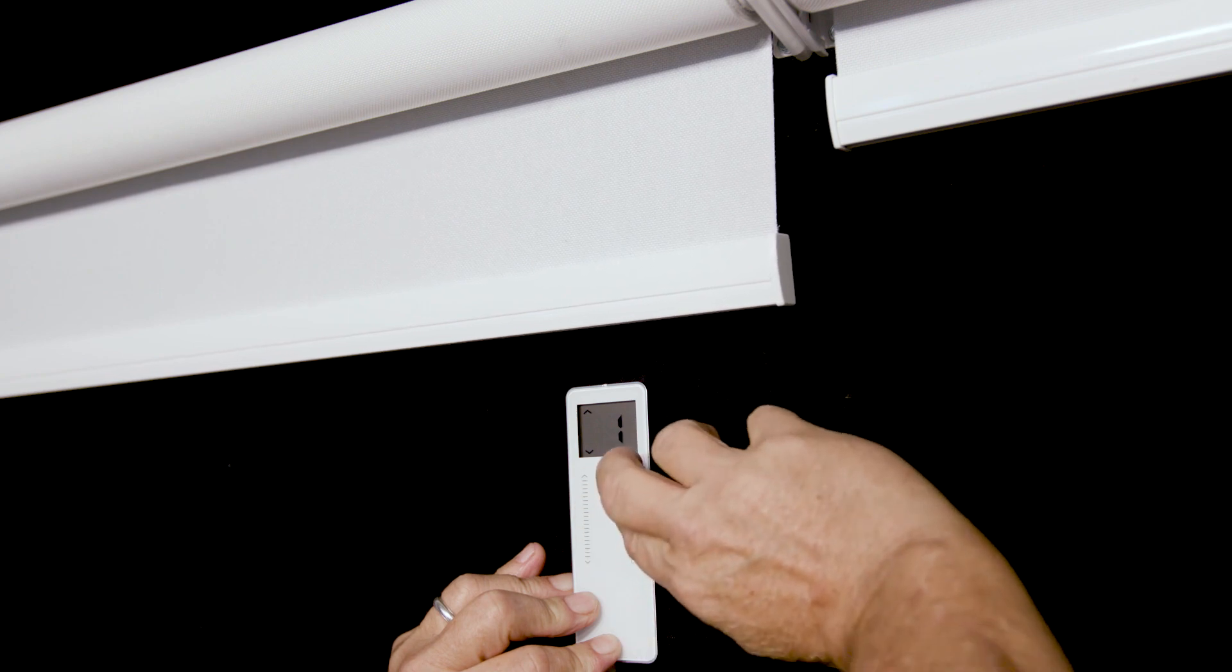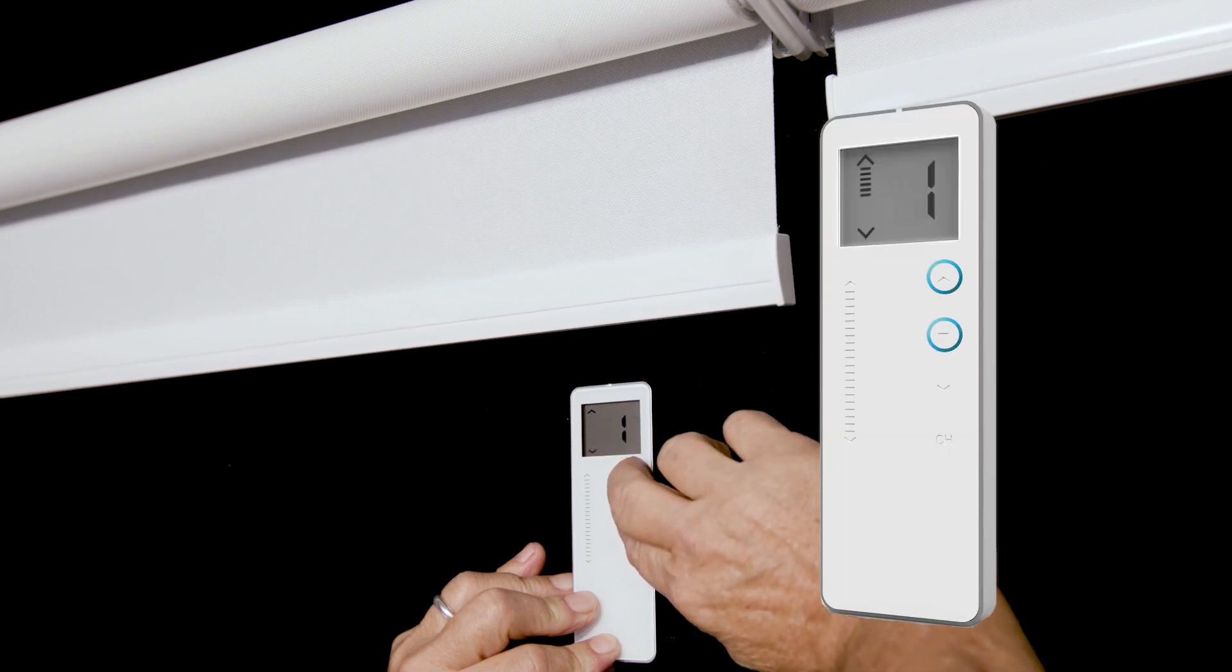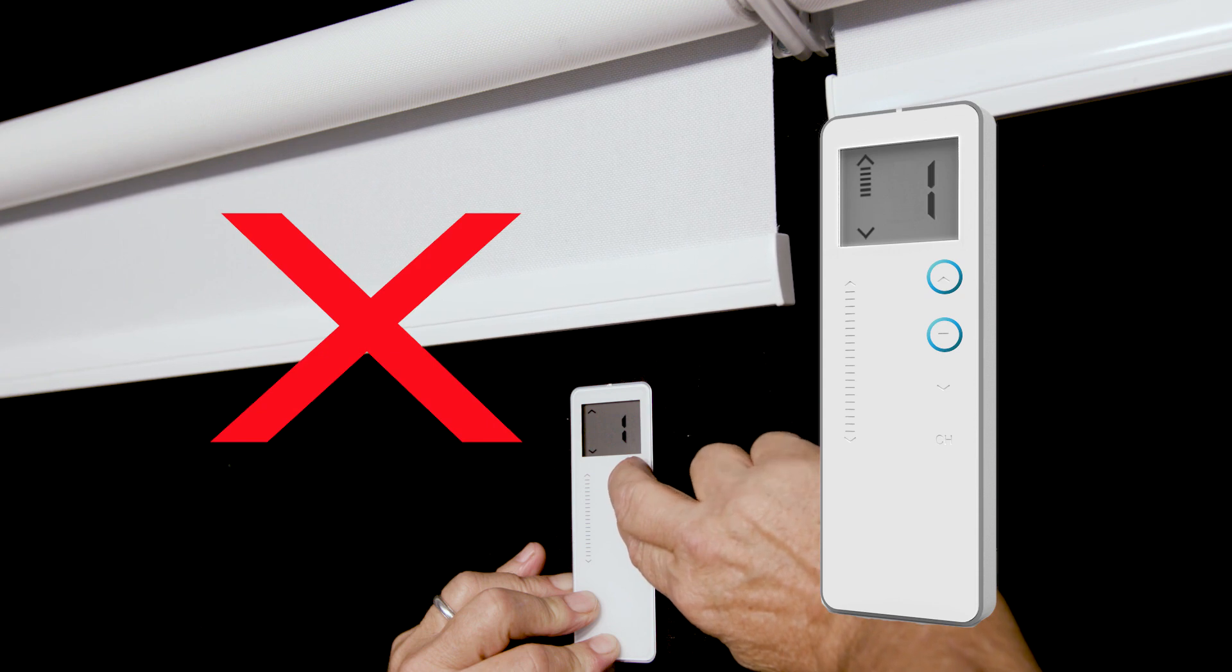For example, when the remote is locked, pressing the up and stop button will not put the shade into step mode.